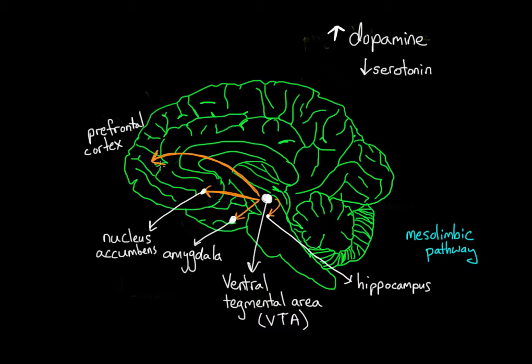So in the previous video we talked about the reward circuit in the brain at sort of a broad level, and now what we're going to talk about is how that works at a lower level, at the neuron level, so that we can discuss issues like tolerance, addiction, and withdrawal.